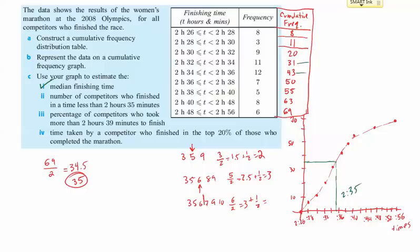Let's look at the number of competitors who finished in a time less than 2 hours, 35 minutes. Well, 2.35, that was the median, which was the 35th person. So we would then assume if that's the 35th person, there are 34 people before him. And so, therefore, 34 people finish in less than 2 hours and 35 minutes.